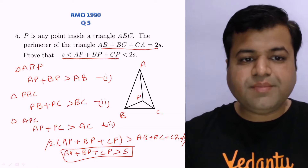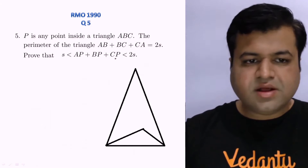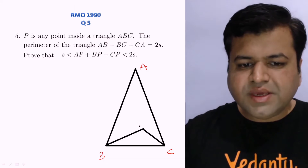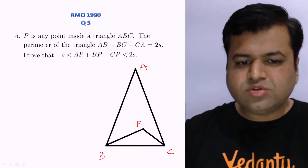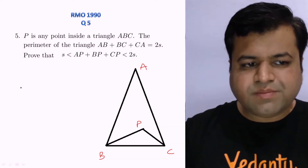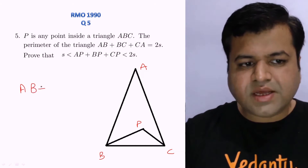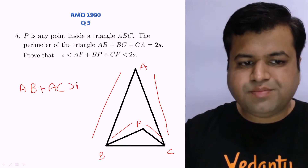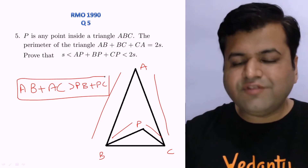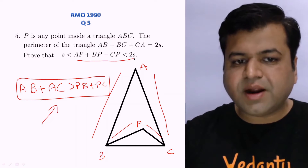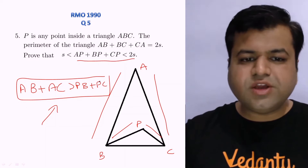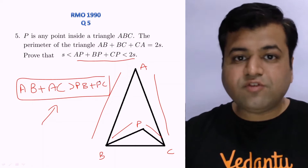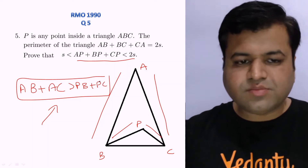Now the second part: we need to prove AP + BP + CP < 2S. For this, we will first prove an auxiliary result: if P is any inside point of triangle ABC, then AB + AC > PB + PC. In the figure it looks obvious, but to get full marks in RMO we need to prove this properly.